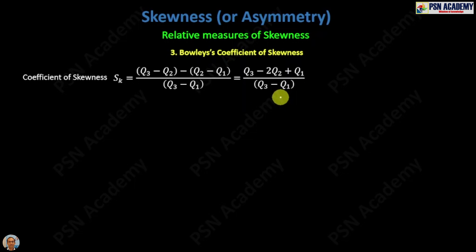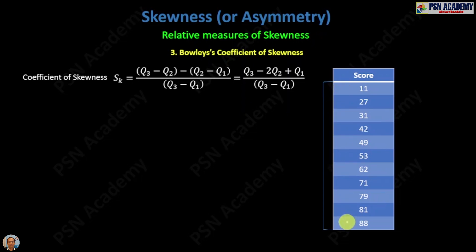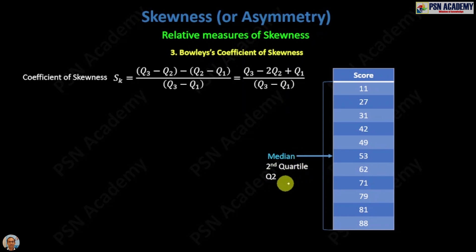For those who do not have a clear idea about quartiles, here is a demonstration. There are 11 scores ordered in ascending order. You take the whole range from the first to the 11th score, find the median, and it is 53. This position is called the second quartile, also written Q2, and is also known as the 50th percentile.